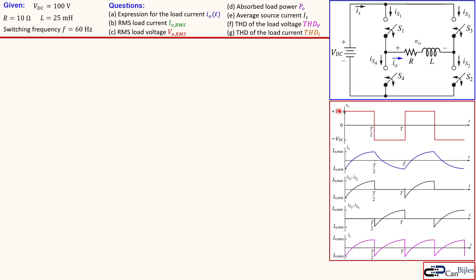These are the waveforms. The load voltage is positive VDC when S1 and S2 are closed, and negative VDC when S3 and S4 are closed. The shape of the load current is different from the resistive load case. Due to the resistive-inductive series connection, we have a charging up and discharging of the load current. This shape is only valid for steady-state analysis. When you add the curves for the two switch pairs, you get the source current plot shown in pink.